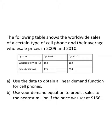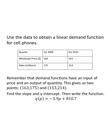The following table shows worldwide sales of a certain type of cell phone and their average wholesale prices in 2009 and 2010. Yes, I do need to update my examples. But it's really blah, blah, blah. Here's a numerical representation of some real world data. This is kind of how things come to us. We don't have a continuous model. We just have we know what the price was, we know what the sales were. So we're going to use the data to obtain a linear demand function, and we're going to use the demand function to predict sales to the nearest million if the price was 156.